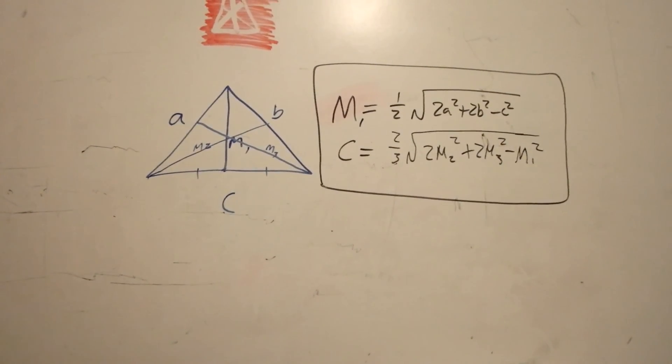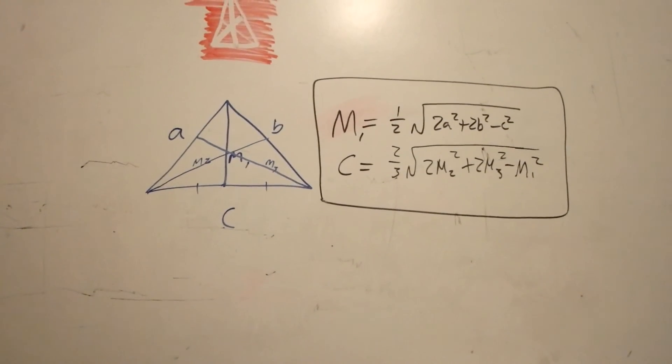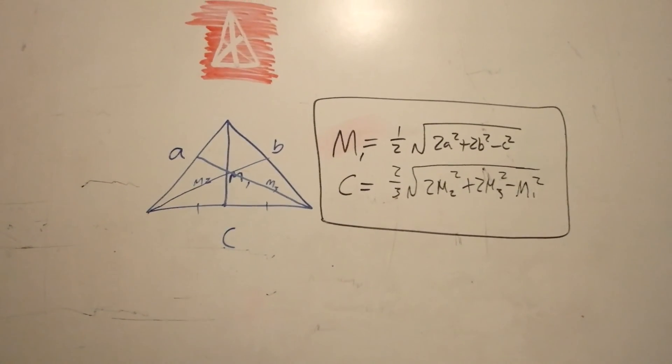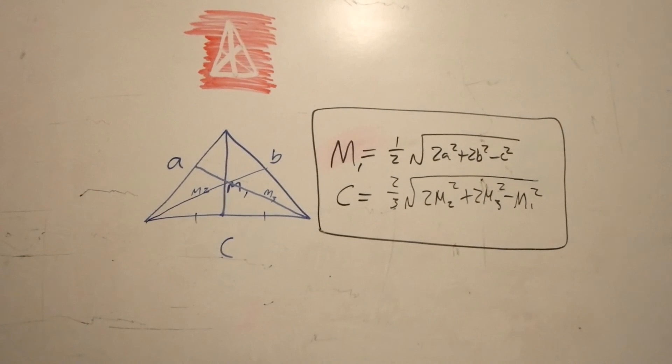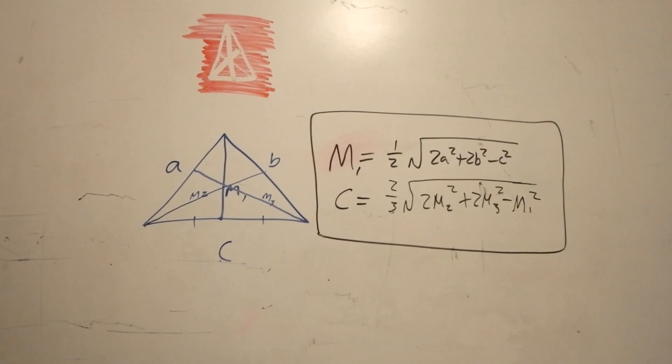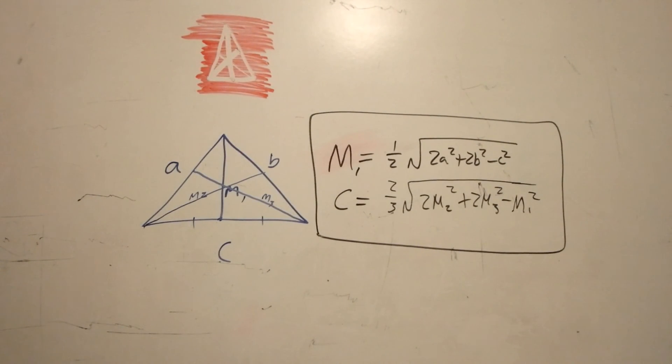In conclusion, what we have here is two very similar formulas, one that converts the sides into a median, and the other that converts the medians into a side length. Thank you for watching, and I hope these end up being helpful at some point. Thank you.